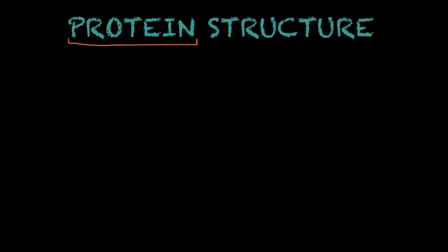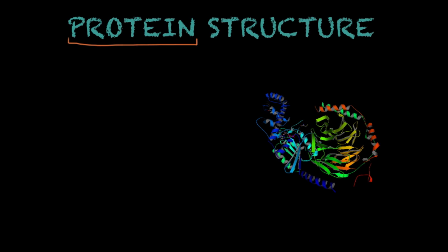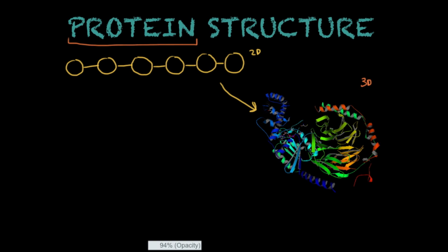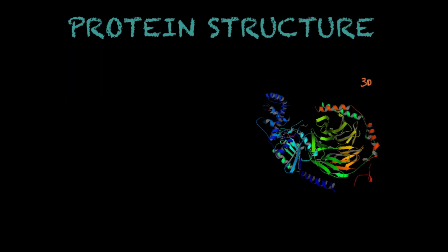Proteins are usually found in a 3D structure, such as this really complex structure here. This is how you usually find proteins. As I mentioned before, the building blocks of proteins are amino acids, which bind to one another with peptide bonds, forming a necklace of amino acids — this is a 2D structure. What we will understand here is how you go from this 2D structure to the complex 3D one.